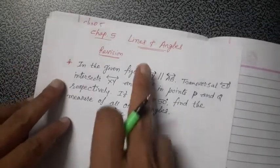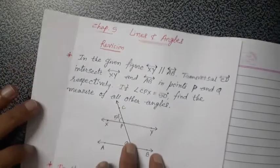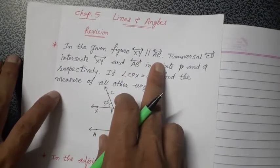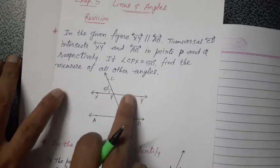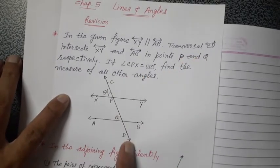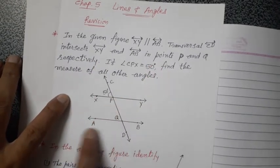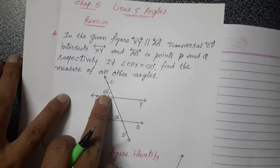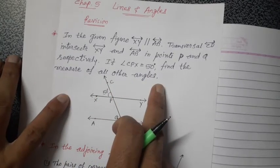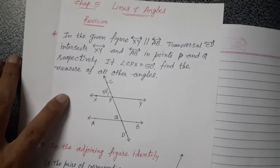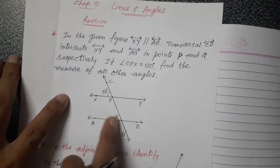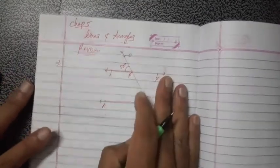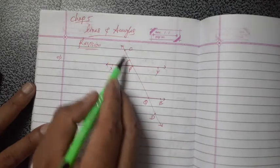Hello students. In Chapter 5, Lines and Angles, today we solve the long questions. In the given figure, XY is parallel to AB. Two parallel lines are there with a transversal CD intersecting XY at P and AB at Q respectively. Angle CPX is given as 50 degrees. Find the measure of all other angles.